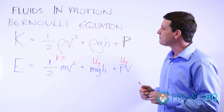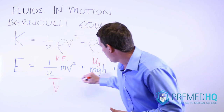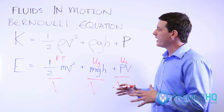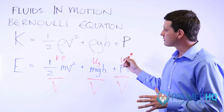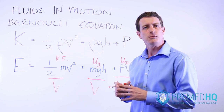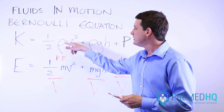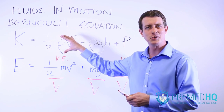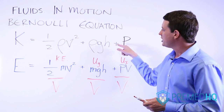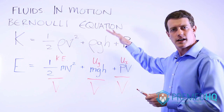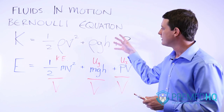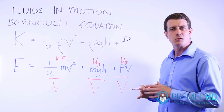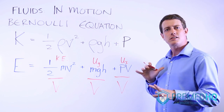If we divide all three of these components by volume, we end up getting the Bernoulli equation. Mass divided by volume equals density, so we get ½ρv² as the kinetic energy component, ρgh as the gravitational potential component, and pressure (P) as the third component of Bernoulli's equation.